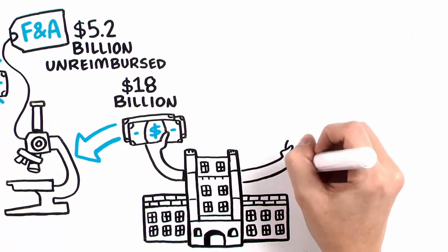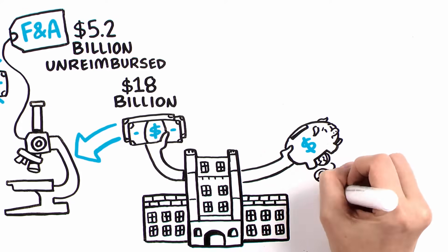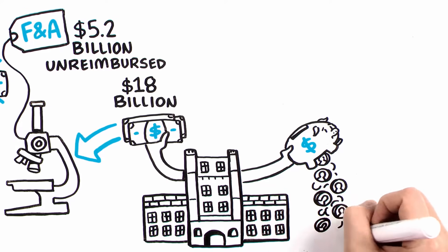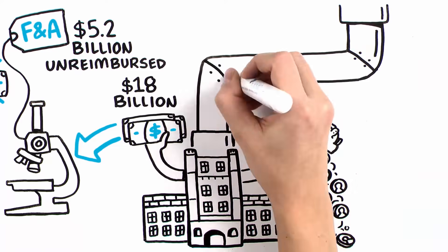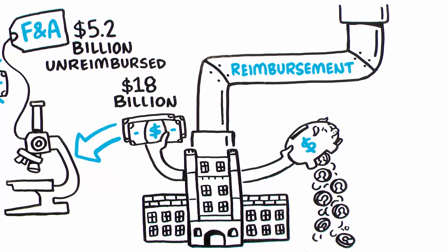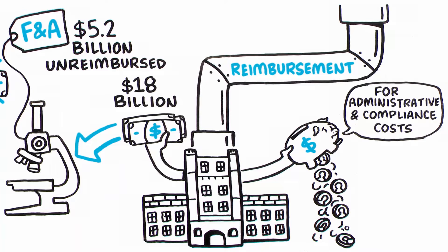This means that universities end up making a significant contribution to supplementing the required cost of conducting federal research. In fact, unlike other research performers that are fully reimbursed for these costs, universities are strictly limited in the amount they can recover from the federal government to pay for administrative and compliance costs associated with the government research they conduct.